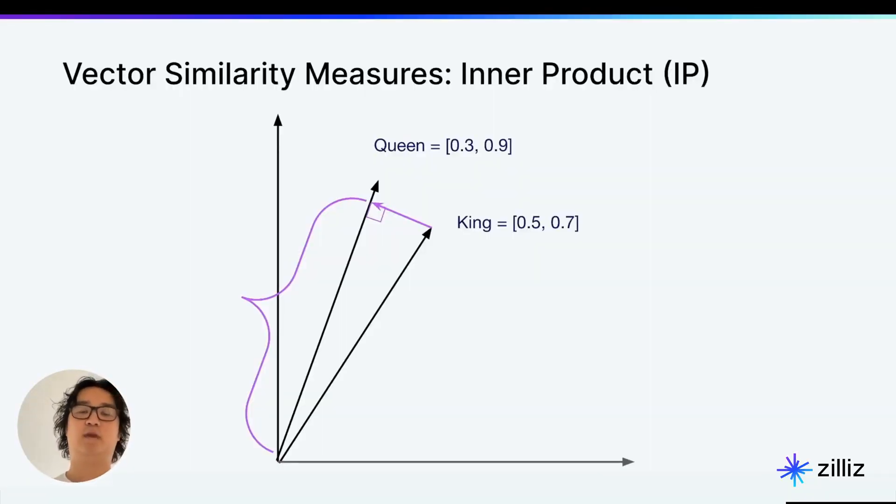Hey everybody, welcome to another installment in our Vector Database Fundamentals series. Today we're going to be talking about inner product, which measures both the orientation and the magnitude of a vector.